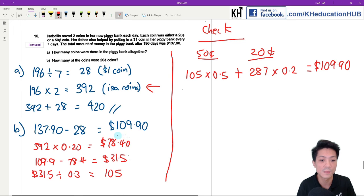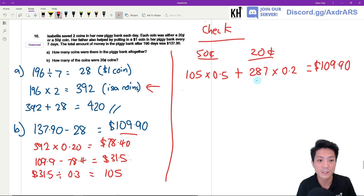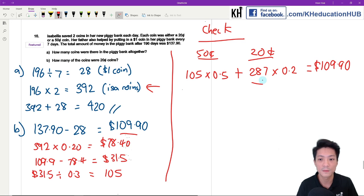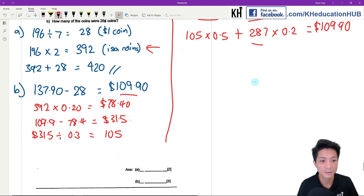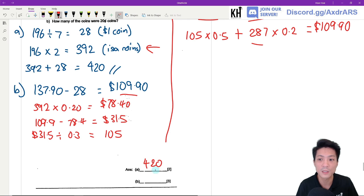Okay, which is the same as the amount over here. Okay, so the answer for part B will be 287 20-cent coins.